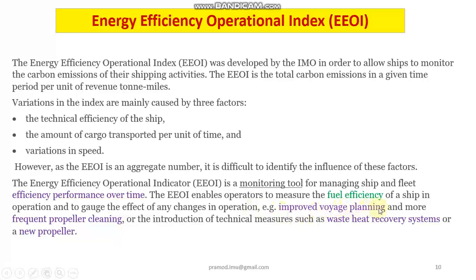Improvement can be achieved by improved voyage planning. Nowadays, we have systems of live weather reports coming to ships, so we can change the voyage plan mid-journey. We can also carry out propeller cleaning, which can definitely help in lesser fuel consumption. We can also adopt things like waste heat recovery systems or perhaps a new type of propeller. These are some methods by which we can achieve more energy efficiency and fuel efficiency, thereby improving the EEOI value of ships.